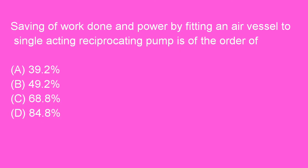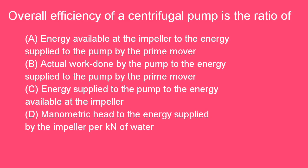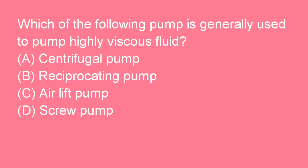Next question: Saving of work done and power by fitting an air vessel to a single acting reciprocating pump is of the order of 84.8%. Option D is right. Next question: Overall efficiency of a centrifugal pump is the ratio of actual work done by the pump to the energy supplied to the pump by the prime mover. Option B is right.